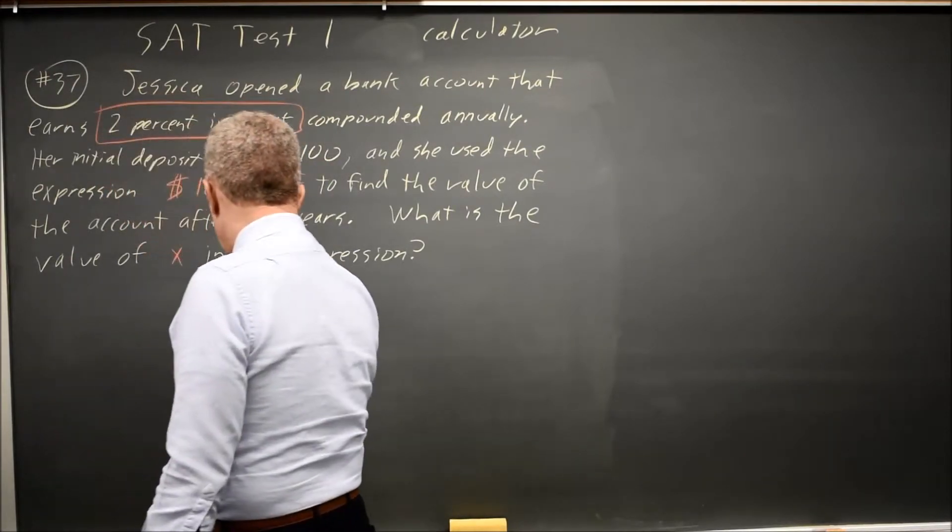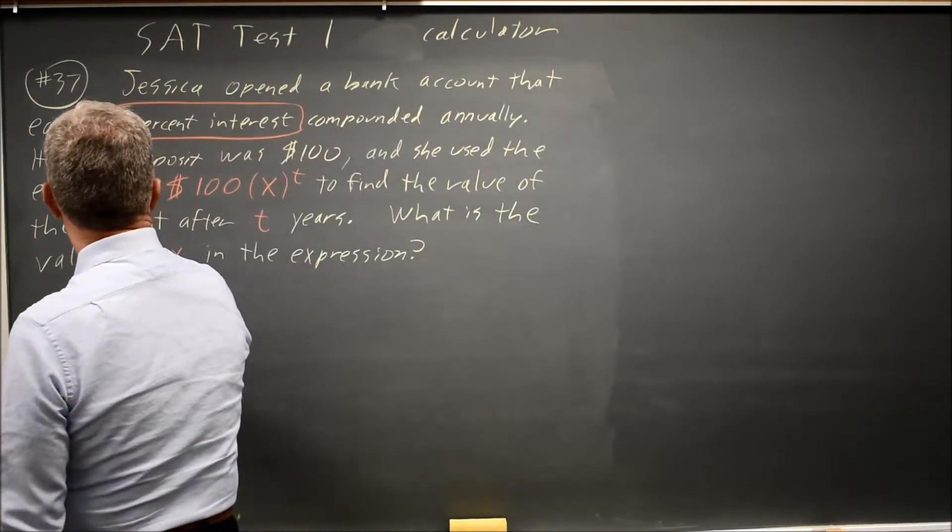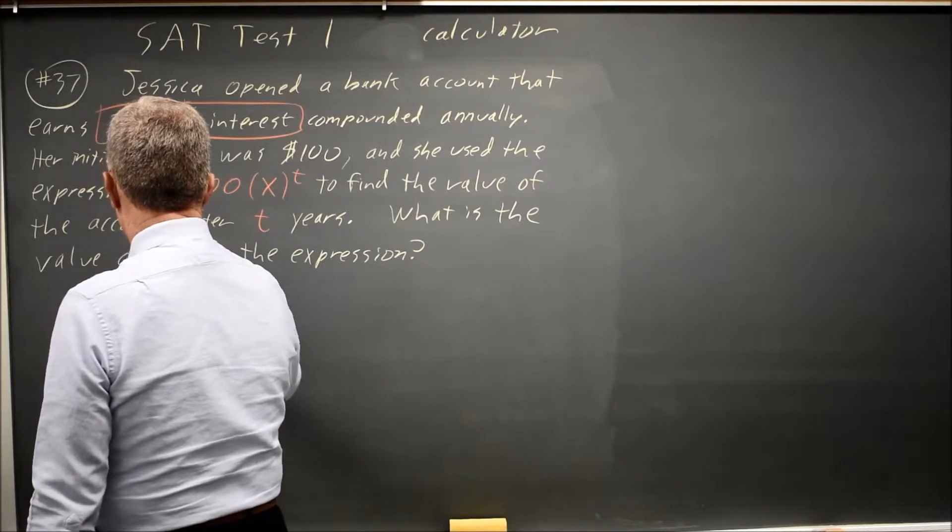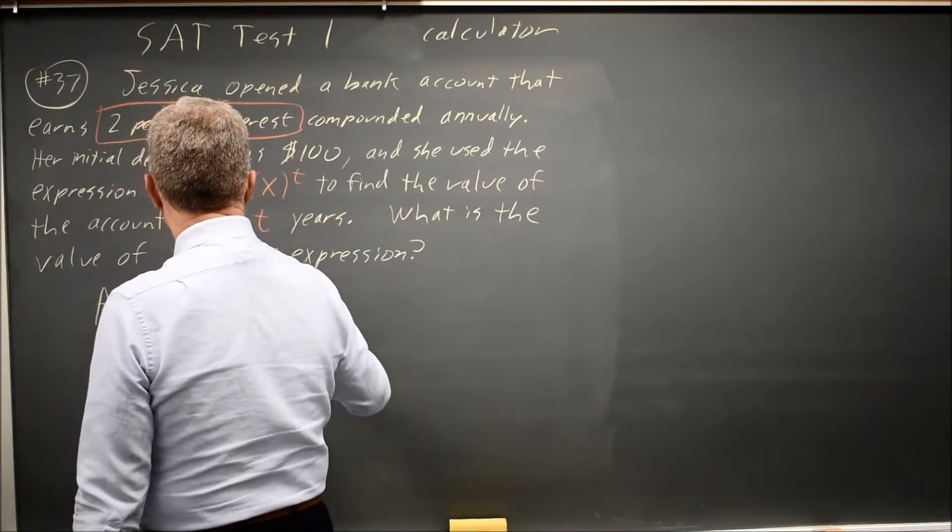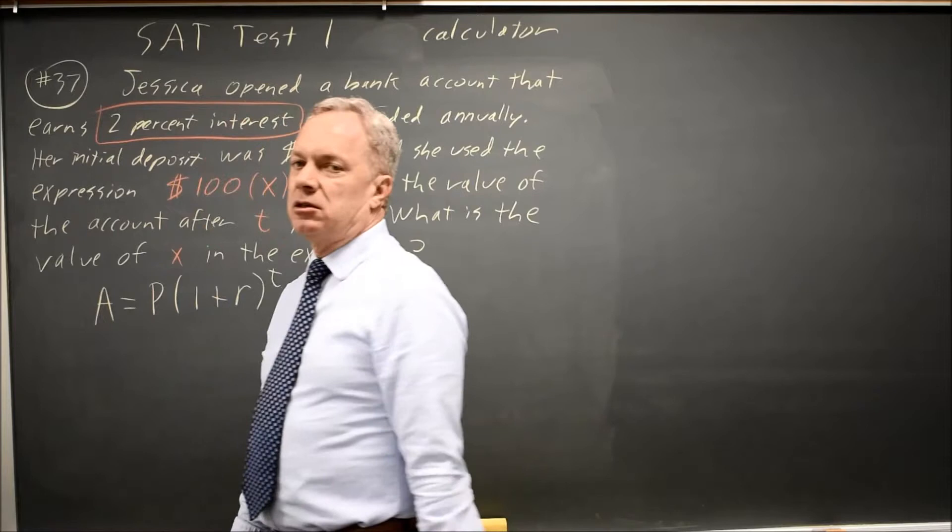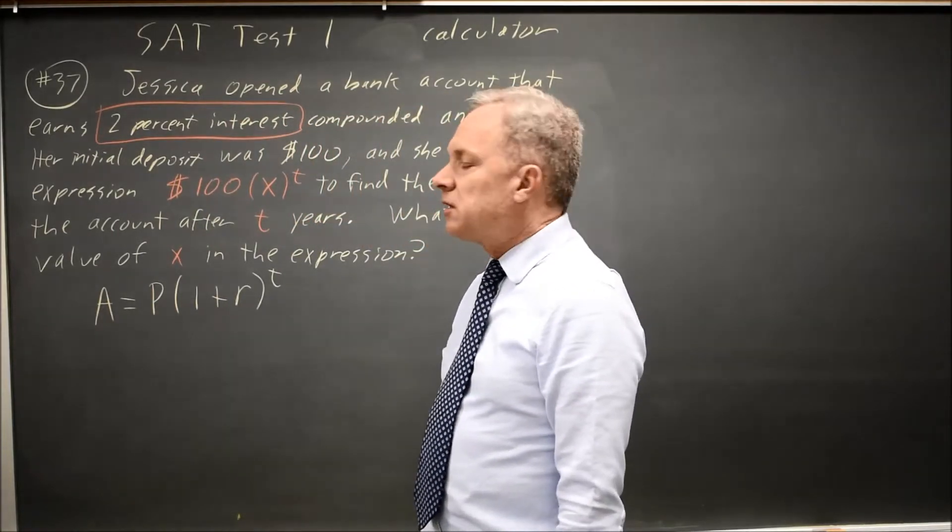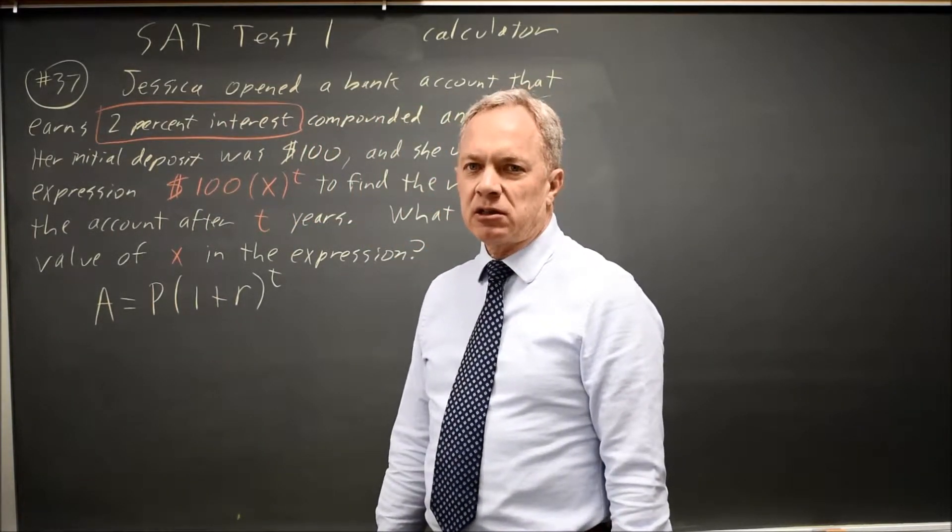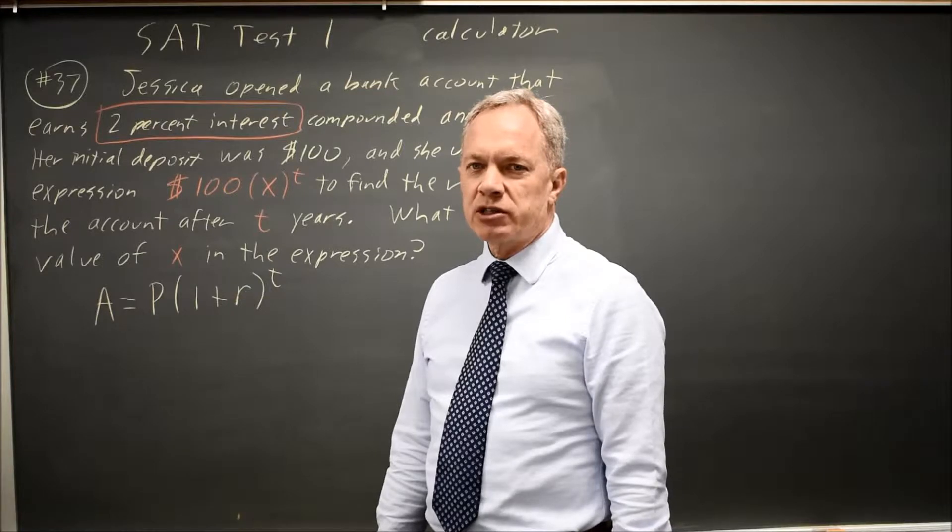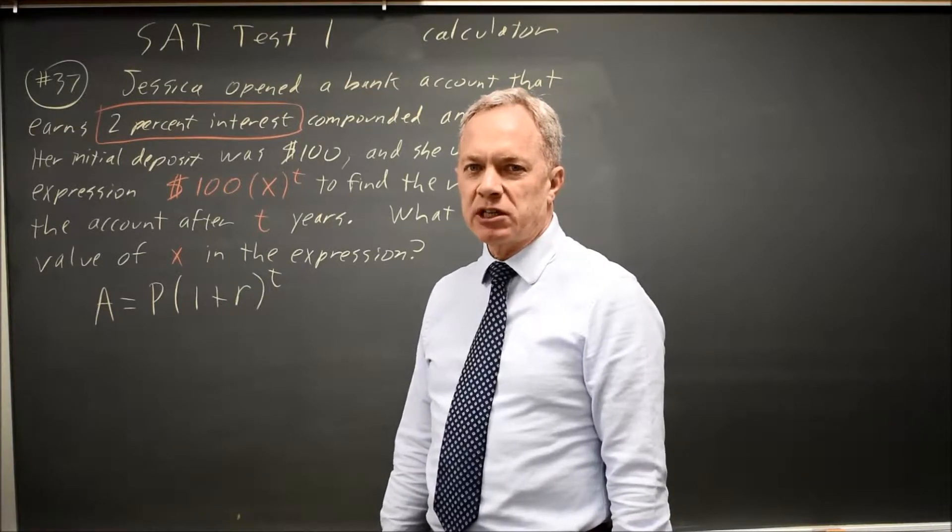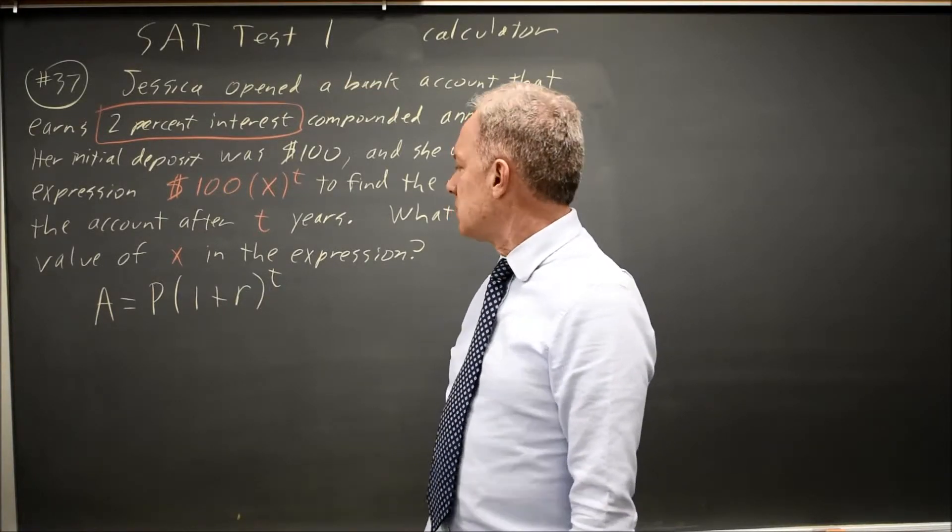And we know that the amount you have is your principal times 1 plus your interest rate to the t for annual compounding. This comes up often on the SAT both for interest directly and for exponential growth or decay. So it's worth memorizing this equation.